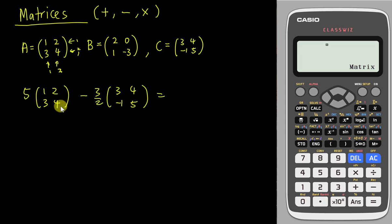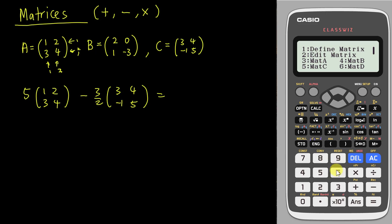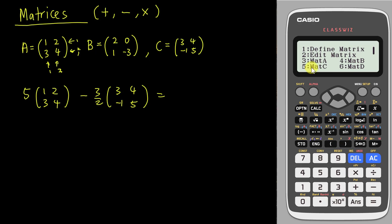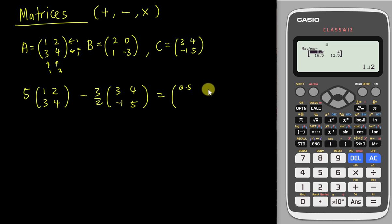In the exam, if they ask you to solve something like 5A minus (3/2)C, you can use the calculator directly since we already have A, B, C defined. Type 5, multiply by matrix A, then minus 3 over 2 (or 1.5), then multiply matrix C. Press enter and the answer is 0.5, 4, 16.5, and 12.5.